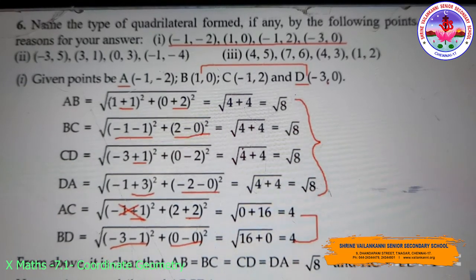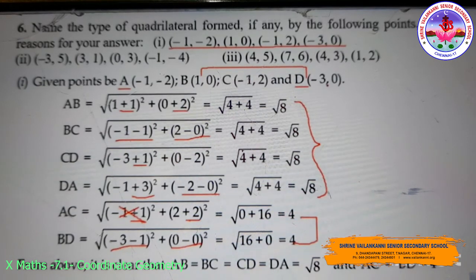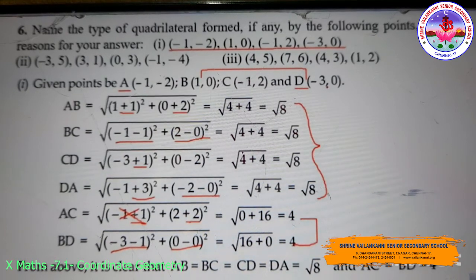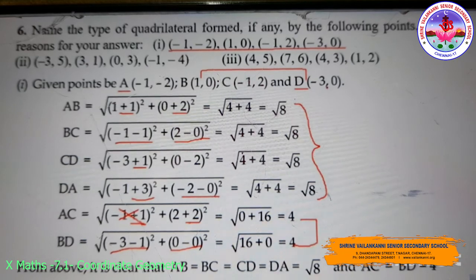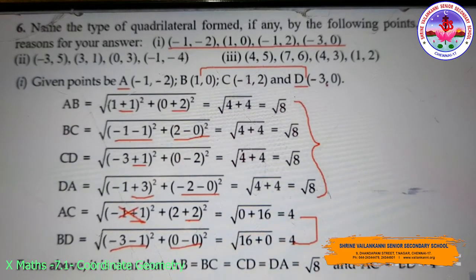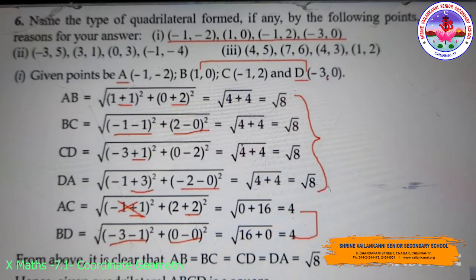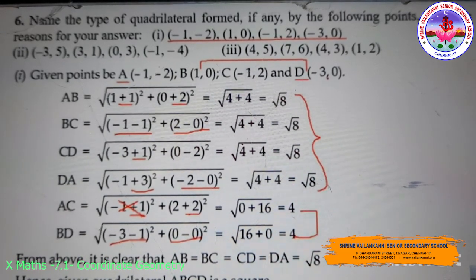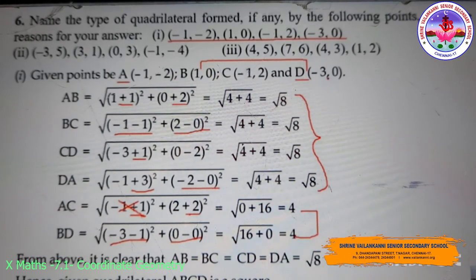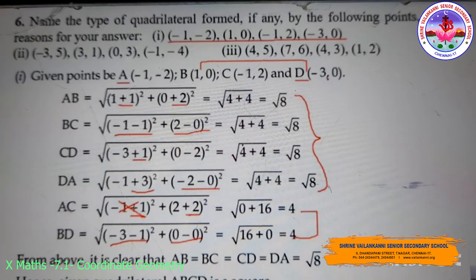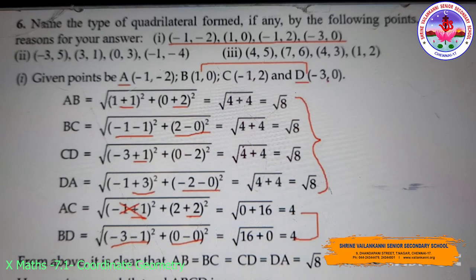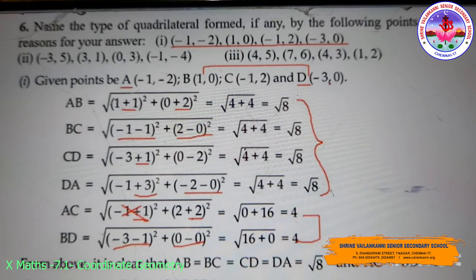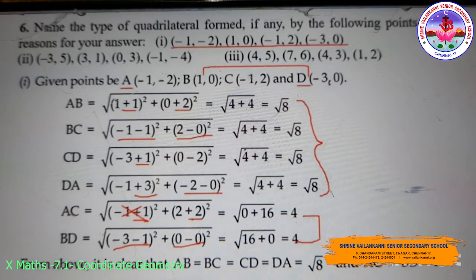For A(-1, -2) and B(1, 0) using the distance formula: AB = √[(x2 - x1)² + (y2 - y1)²]. Where x2 = 1, x1 = -1, so (1 - (-1))² = (2)². And y2 = 0, y1 = -2, so (0 - (-2))² = (2)². This gives √(4 + 4) = √8.